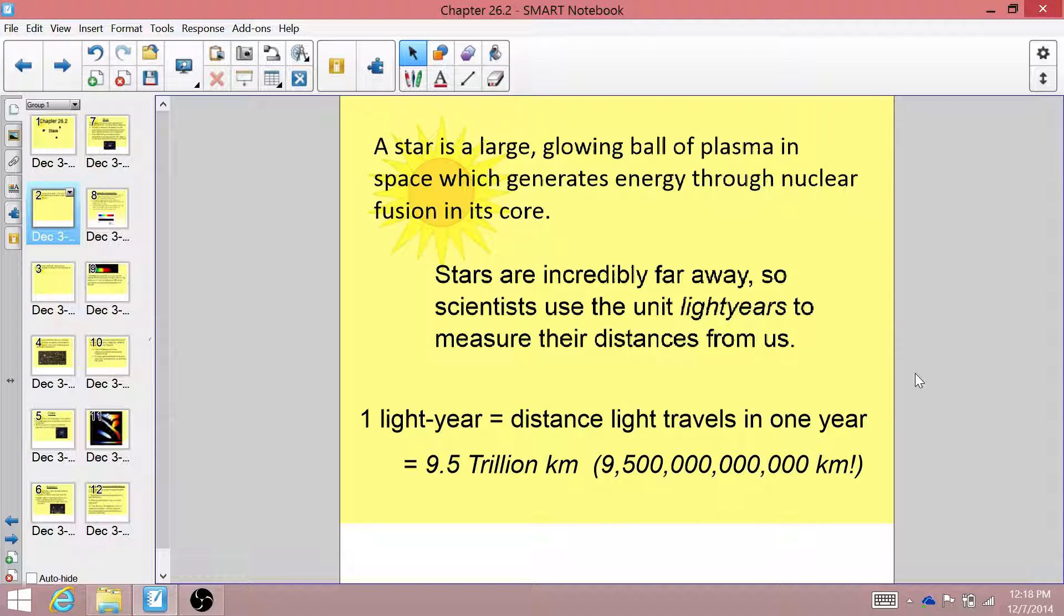So if we let the light from our sun travel from the surface straight out through space for one year, the distance it traveled, which is actually 9.5 trillion kilometers, is one light year.